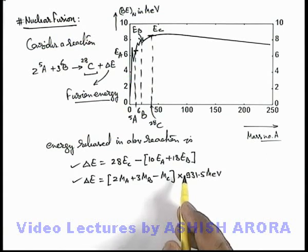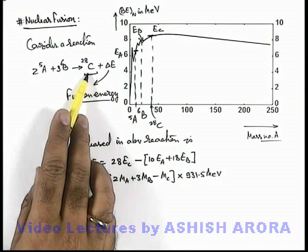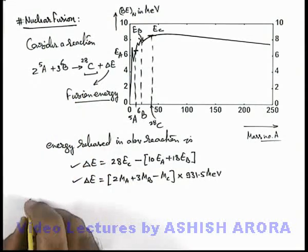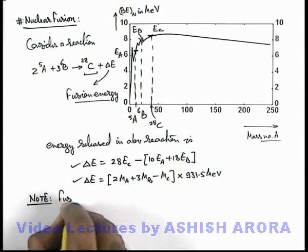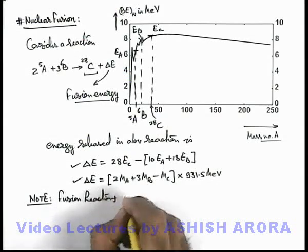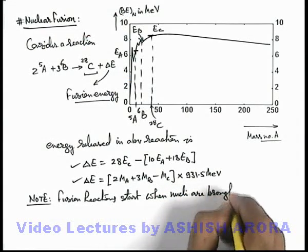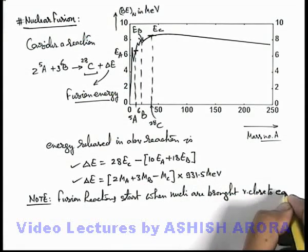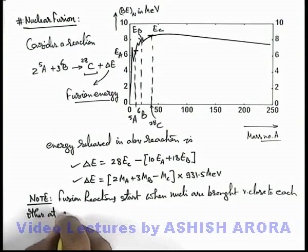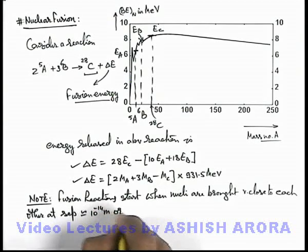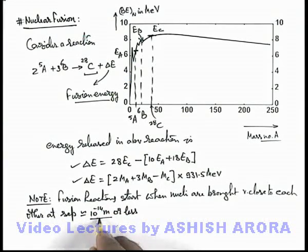But there is one more important point to be understood here. These nuclei will fuse to produce nucleus C only when these are brought very close to each other. So here we can write down a note also: that fusion reactions start when nuclei are brought very close to each other at separation which is of the order of 10 to the power minus 14 meter or less, because at separation more than this, nuclear forces won't come into picture so no fusion will start. And at this separation, nuclei can be brought only when the temperature of the sample is excessively high, so that their kinetic energy becomes too large that the closest approach separation will be very less.